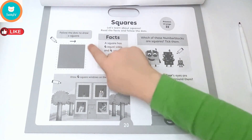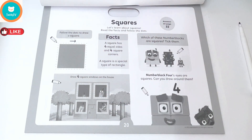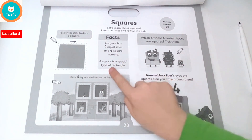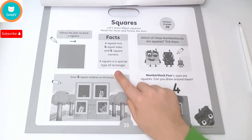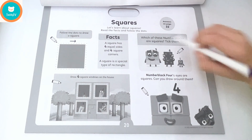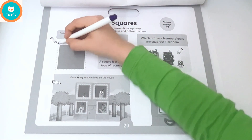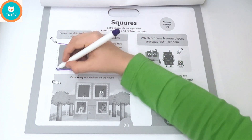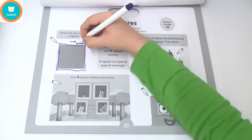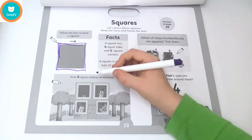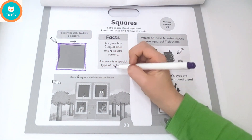Squares! Follow the dots to draw a square. Facts: a square has four equal sides and four square corners. A square is a special type of rectangle. Follow the dots to draw a square: one, two, three, four. Let's draw this line better — yay! Draw four square windows on the house.